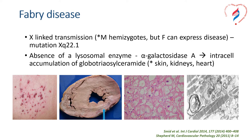Electron microscopy is very good at describing the presence of what are called zebra bodies. When the kidneys are affected, chronic kidney disease can ensue and proteinuria is usually the first sign. Neurological signs include acroparesthesia, which are painful symptoms of the extremities, some of the first symptoms to occur. But it can also lead to stroke.